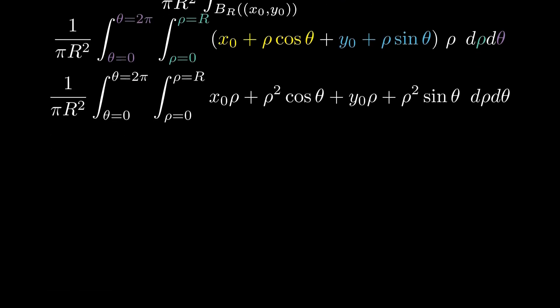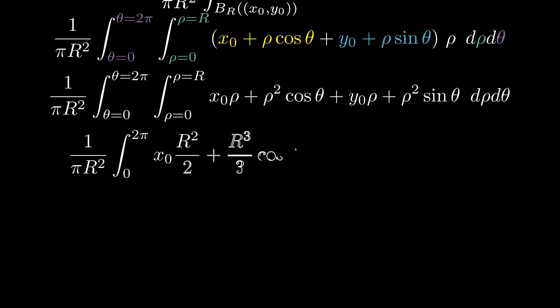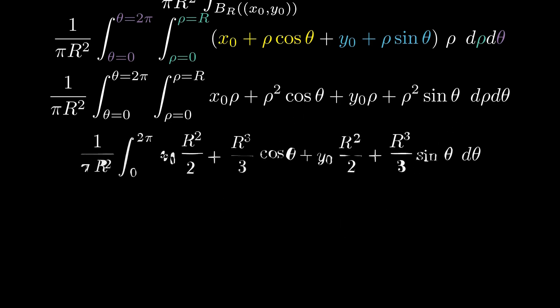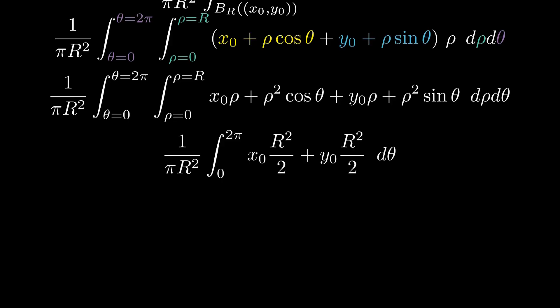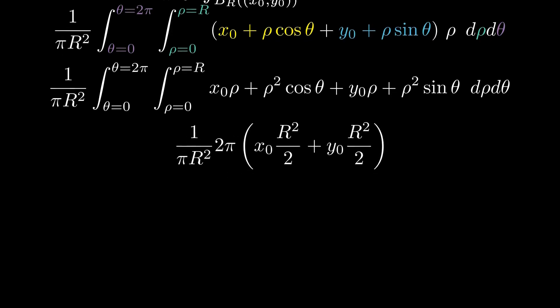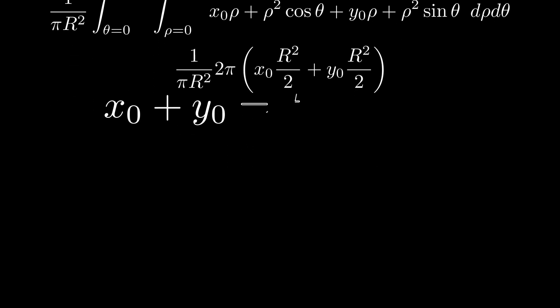Integrate first with respect to rho. The sine and cosine terms vanish when integrated from zero to two pi. So the integral simplifies. And after a few steps, the final result is exactly x naught plus y naught. Perfect! The function satisfies the mean value property.